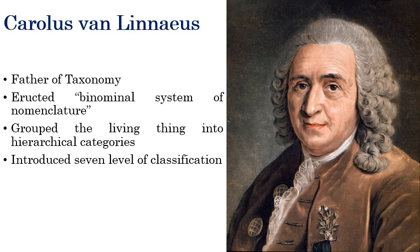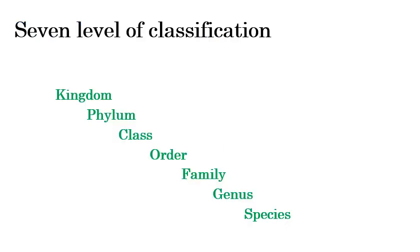Linnaeus not only erected the binomial system but also grouped living things into hierarchical categories. He introduced seven levels of classification, which are very important for the naming and positioning of each fungus: Kingdom, Phylum, Class, Order, Family, Genus, and Species.